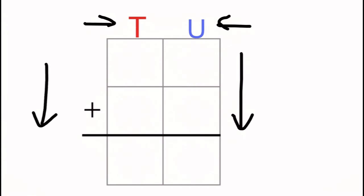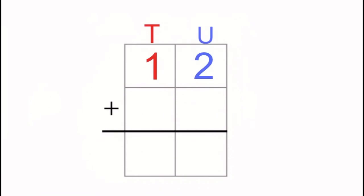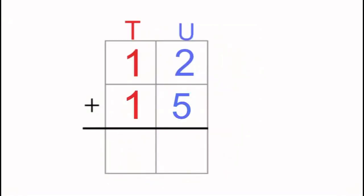Now we can put our two numbers 12 and 15 into the column addition. Start by putting the 12, you can see that the one 10 is in the tens column and the two units are in the units column. And we'll do exactly the same for 15 with our five units here and our one 10 here. Now we can actually add both of these numbers together.